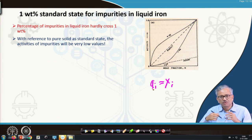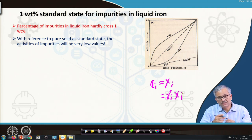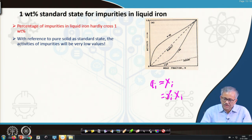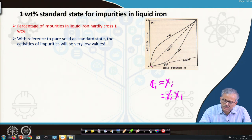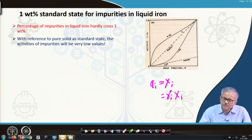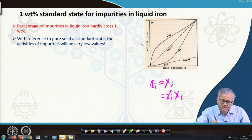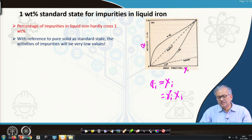In an actual non-ideal system, activity is not always equal to xi. Instead, activity equals gamma_i times xi, because there is interaction between solute and solvent. This introduces the activity coefficient. The activity-composition relationship follows this form. When pure, activity becomes 1. In other cases with positive deviation, the activity-composition relationship deviates from the Raoultian line. This is called the Raoultian scale, where activity A_i is plotted against mole fraction x_i.